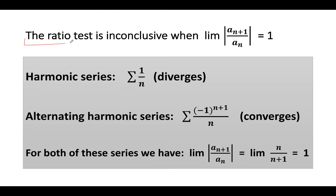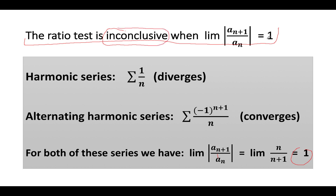The ratio test is inconclusive when the limit is equal to 1. For example, we know the harmonic series diverges to infinity. On the other hand, the alternating harmonic series converges and converges to log 2. But for both of those series, when we look at the ratio a_{n+1} over a_n, the limit equals 1. So indeed in this case the test is inconclusive — it doesn't provide any information when the limit of this quantity is equal to 1.